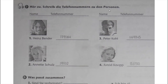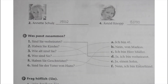For exercise seven, we listen and write down the phone numbers. It may be possible that photos or names are different in your book, so just go through it. The answers given here: Heinz Bender - 7890 642 3911 32. Then: 69 845. Then: 1538 0.